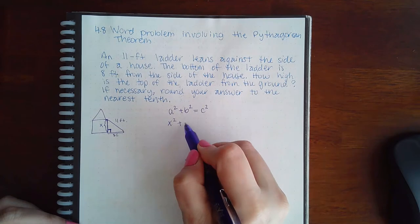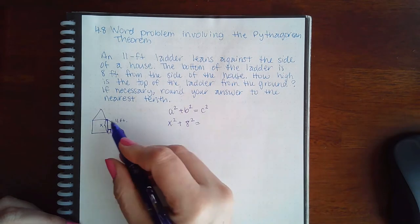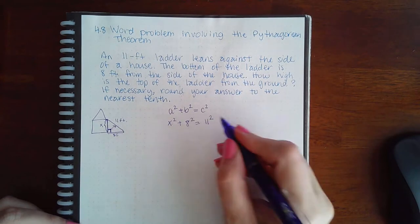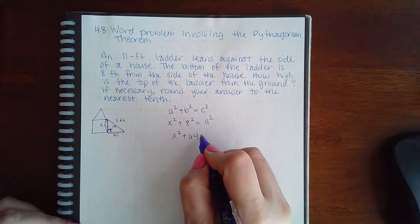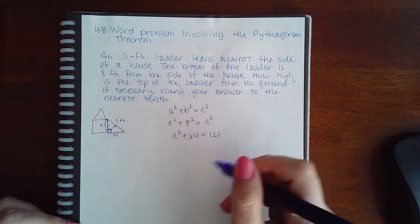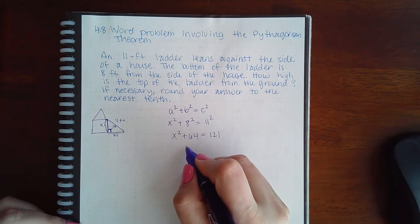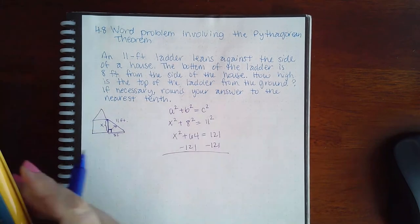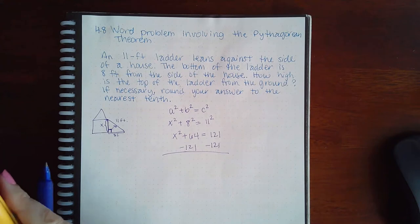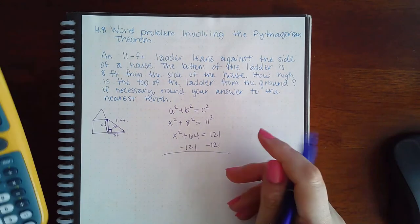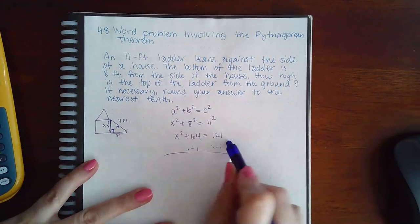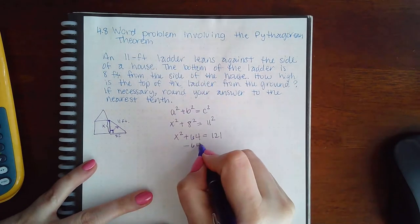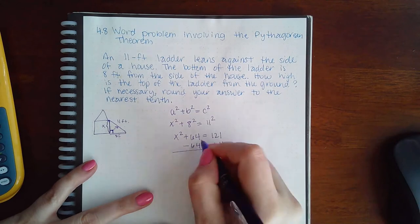So a squared, b would be 8 squared, and c is the hypotenuse, which is across from the right angle, 11 squared. So I have x squared plus 64 equals 121. I can minus 121—actually, I need to solve for x, so I'm going to minus 64 on both sides. We get x squared equals 57, since 121 minus 64 is 57.